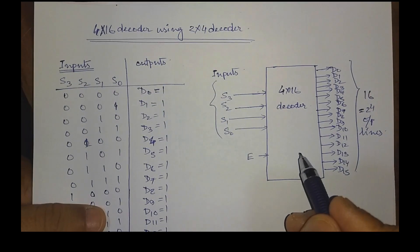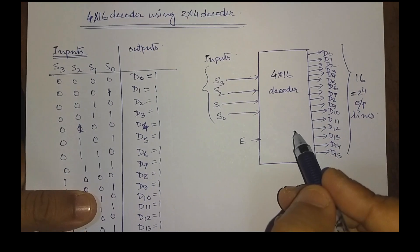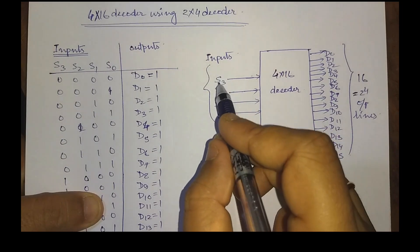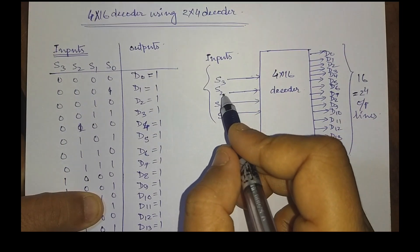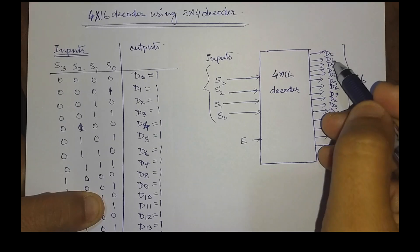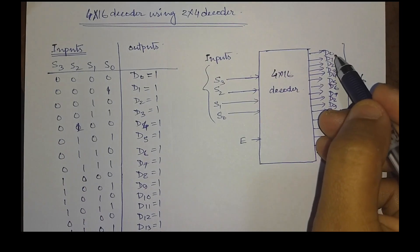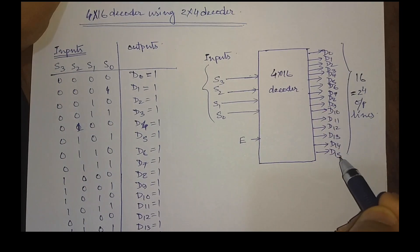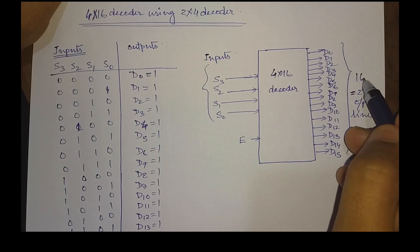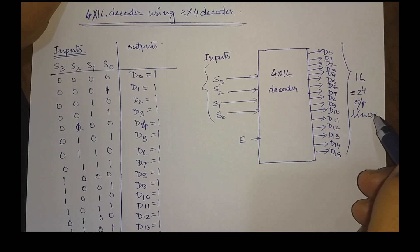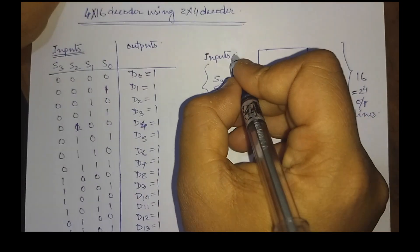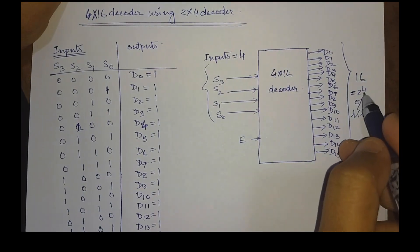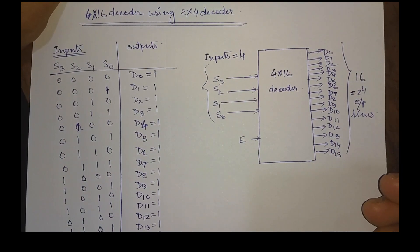This is the block diagram of a 4x16 decoder. That means we will have 4 input lines: S3, S2, S1, and S0, and we will have output lines starting from D0 to D15. So we will have 16, or 2^4, number of output lines. That means input lines here is equal to 4, therefore we will have 2^4 equal to 16 output lines.